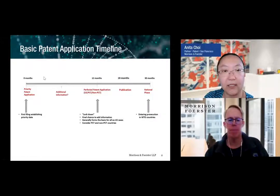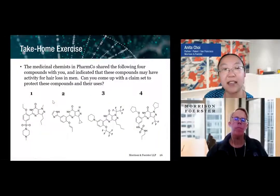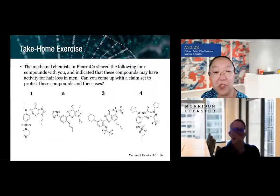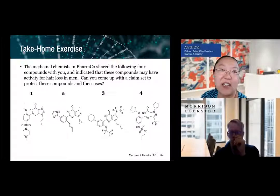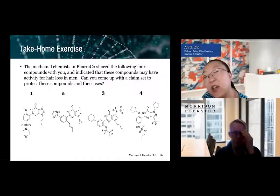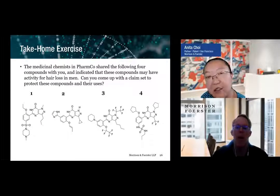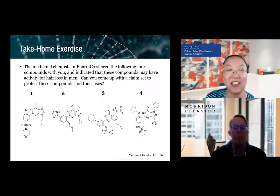The last slide is a hypothetical take-home exercise. You're welcome to try this exercise and email me your answers. The hypothetical is that you have some medicinal chemists at a pharma company who've shared four compounds with you. They indicate these compounds may have activity for hair loss in men. The question is: can you come up with a claim set to protect these compounds and their uses? If there are any questions you'd want to ask the scientists to further refine your claim set, feel free to raise them. That's the take-home exercise, and I hope many of you will give it a try.